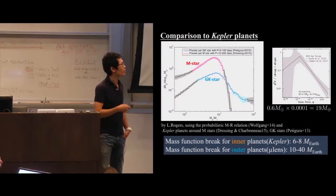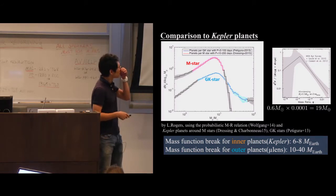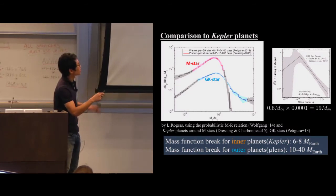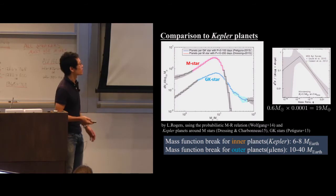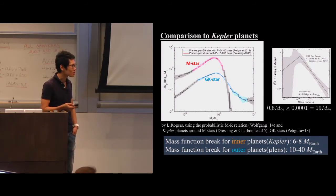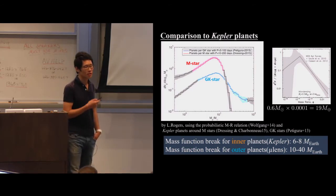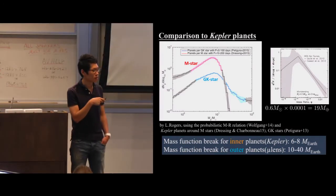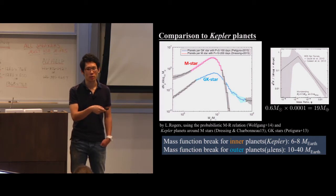In response to questions: in this study, we did not check the metallicity environment of the host star, and we only compared the break position in mass rather than absolute planet frequency. Christian Clanton may address the broader comparison with RV results. For the statistical fitting, we used chi-square minimization with single and broken power-law functions.